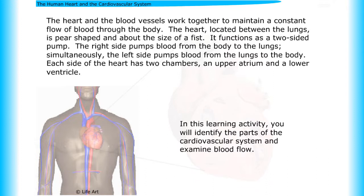The right side pumps blood from the body to the lungs. Simultaneously, the left side pumps blood from the lungs to the body. Each side of the heart has two chambers, an upper atrium and a lower ventricle.